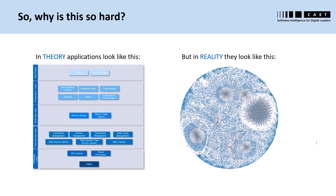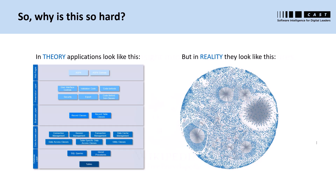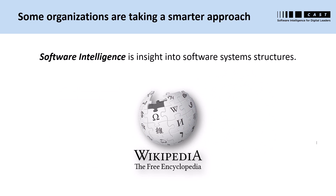So why is this so hard to do? In theory, applications look neatly organized with clearly delineated tiers and nicely componentized elements. The reality is most enterprise applications today are highly complex, multi-tier, multi-technology spider webs of interconnectivity that have grown over years or even decades. Some organizations are taking a smarter approach using a technology called software intelligence — insight into software system structures — and that's the business CAST is in. CAST creates products and technologies that produce software intelligence so organizations can make smarter decisions about their application portfolios.